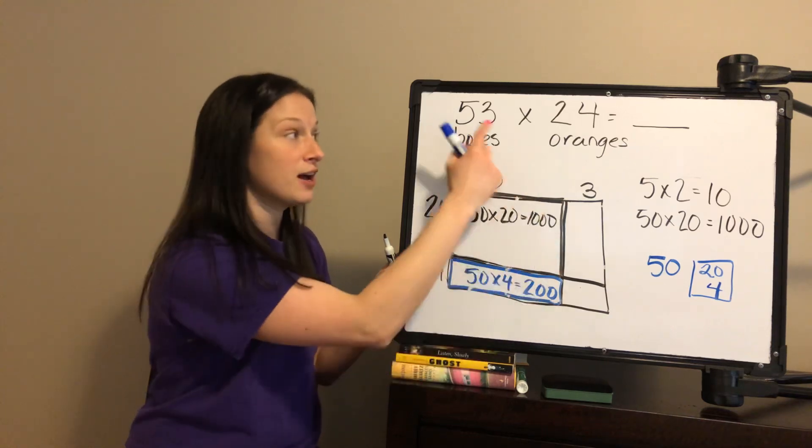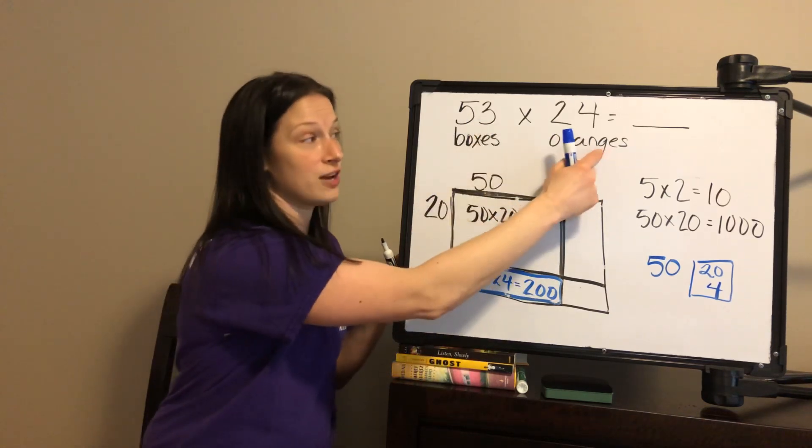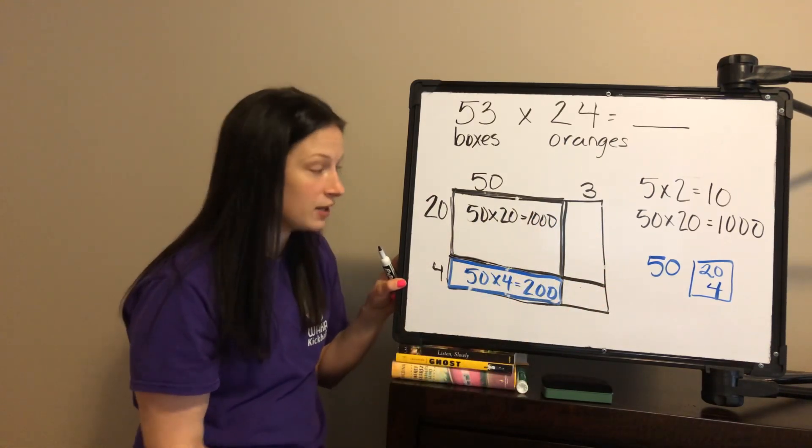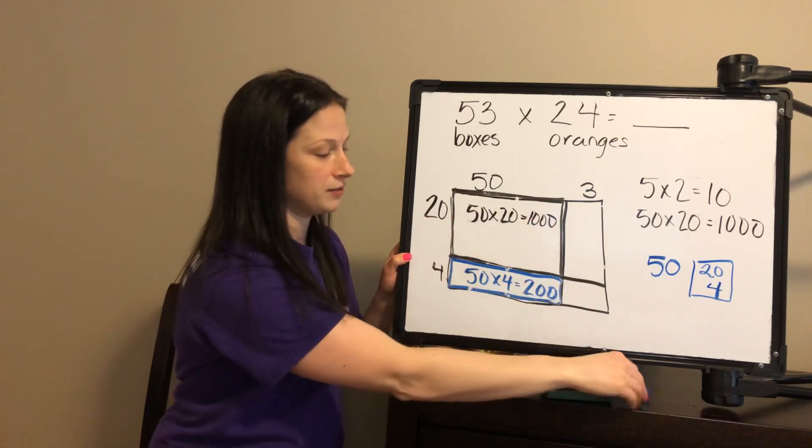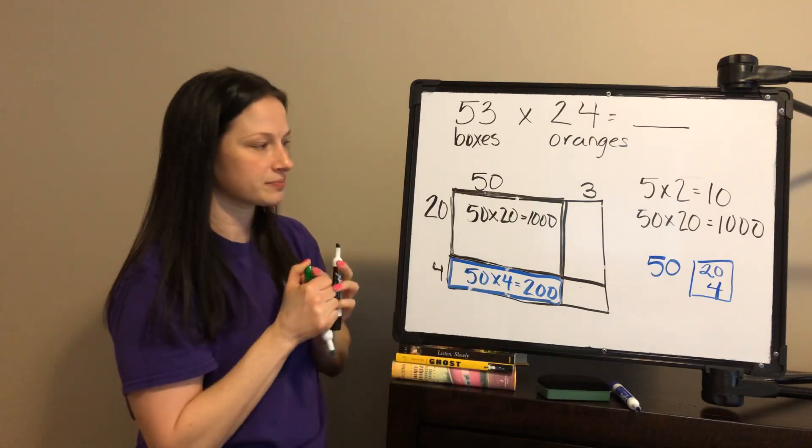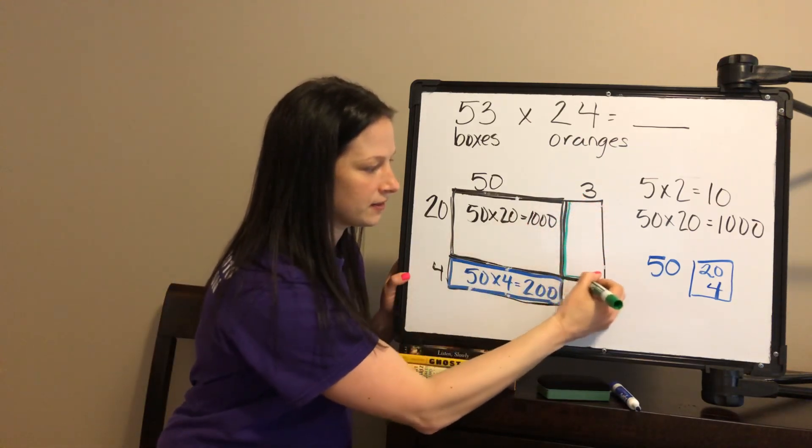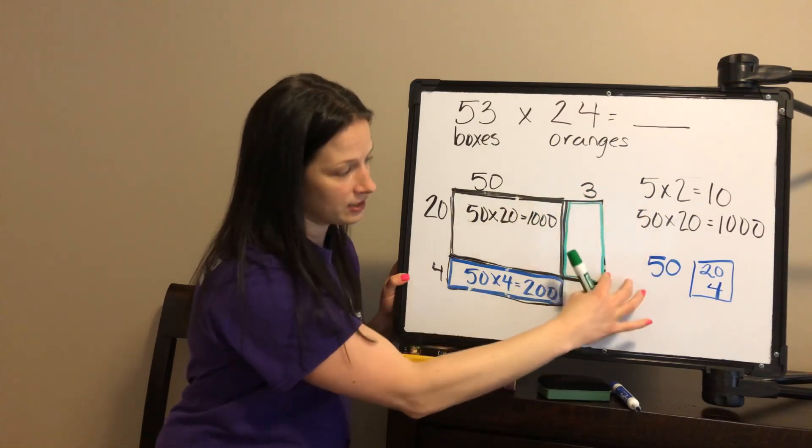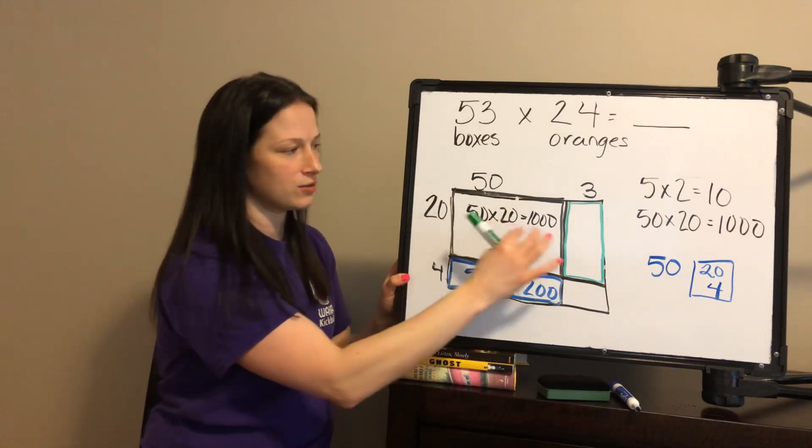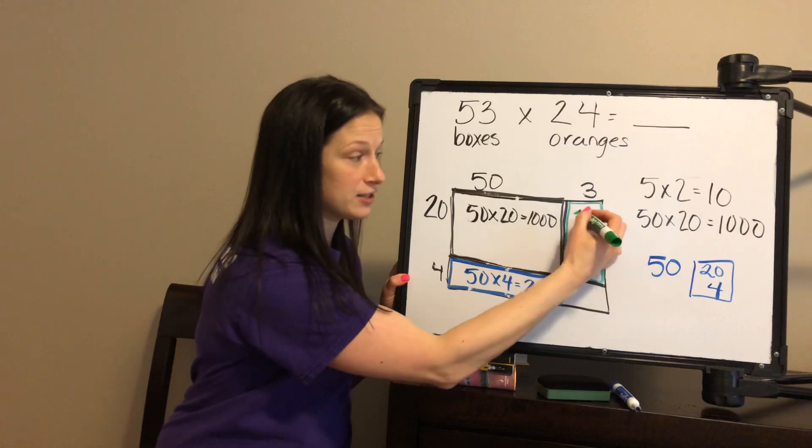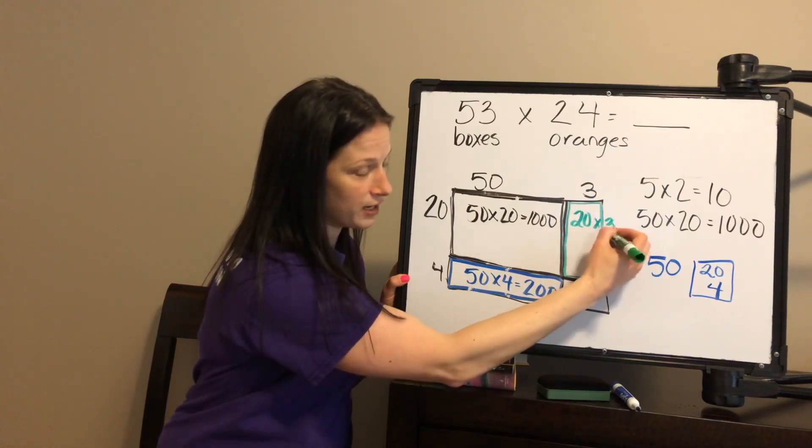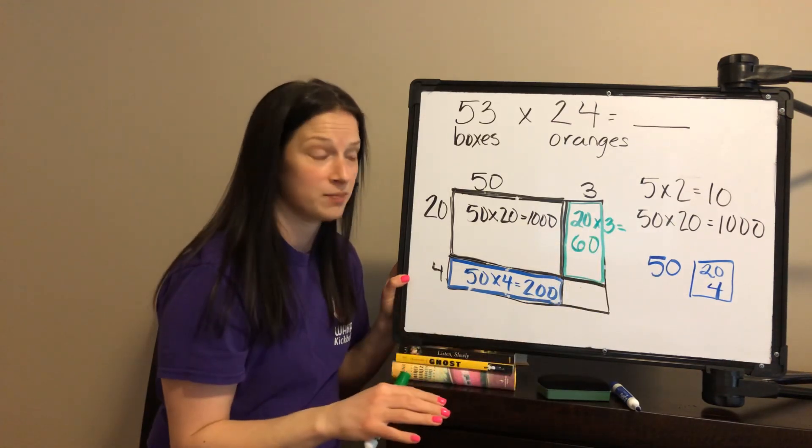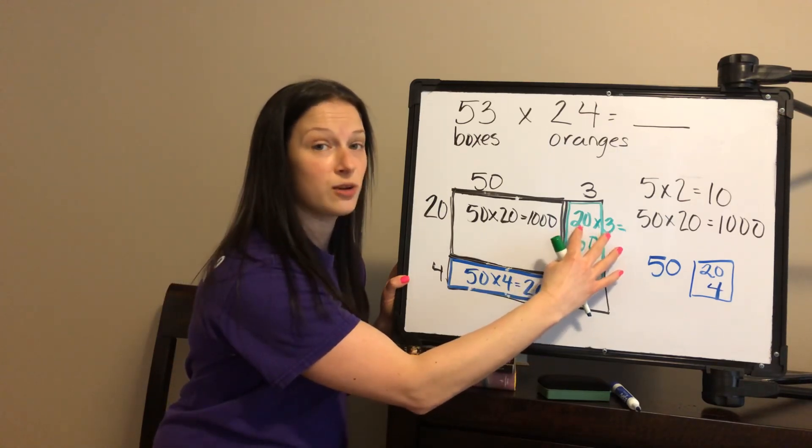But I'm not done yet because I need three more boxes that each have 24 oranges. So let's think about this box over here. We are going to be thinking about a width of 3. And you'll notice that neither of the lengths is labeled, but we know opposite sides are equal. So what does this box represent here? It's going to be 20 times 3, which equals 60. Again, the reason we're breaking these up is because your student knows 2 times 3, so they know 20 times 3.